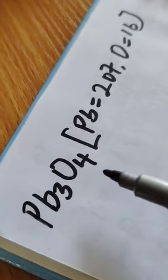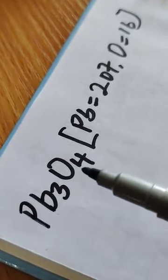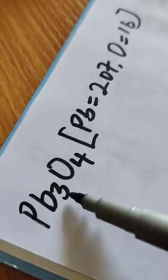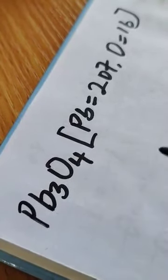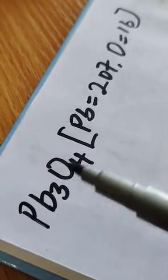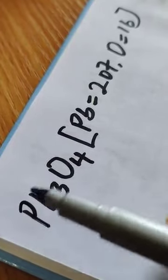Now we have a compound set before us, this is tri-lead tetraoxide. We are going to be calculating the percentage composition of lead in this compound.